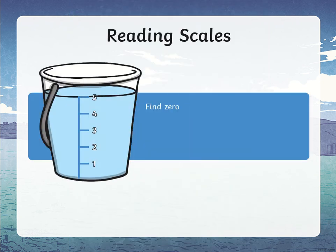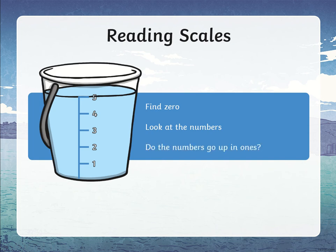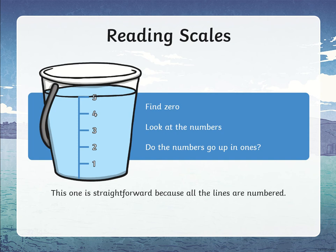Having a look at scales is really important because then we'll be able to measure in milliliters and litres. The first thing you need to do is find where zero is — zero is down here. Then look at the numbers: we've got one, two, three, four, five. Think about what the numbers go up by — some go up by ones, twos, fives, tens, fifties, one hundreds, or thousands. So make sure you pay attention to how it's going up. This one is pretty straightforward because there are actually numbers there.